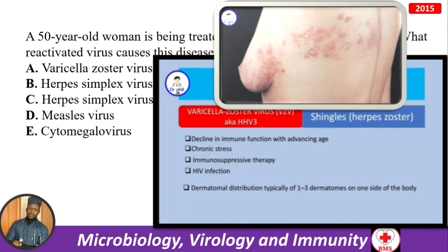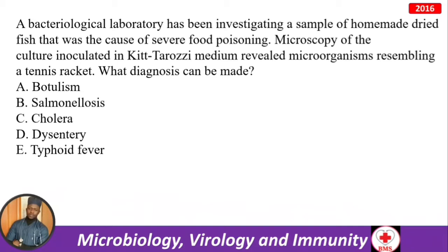A bacteriological laboratory investigates homemade dried fish that caused severe food poisoning. Microscopy of culture inoculated in Kitt-Tarozzi medium reveals a microorganism resembling a tennis racket. Kitt-Tarozzi medium is for anaerobes — and the tennis racket appearance combined with anaerobic conditions points to botulism. The causative agent is Clostridium botulinum.